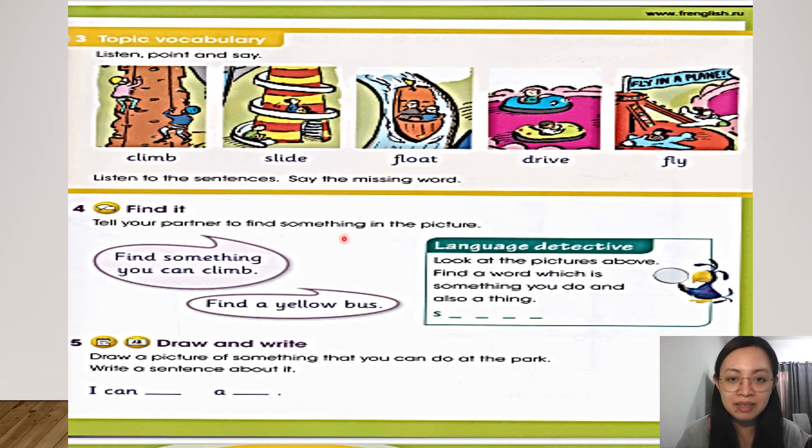So tell your partner to find something in the picture. But this time instead of your partner, you're going to ask your brother or your sister or your mom or your dad, or if you have your cousins and friends at home. Find something that you can climb and find a yellow bus. So draw and write. This time, draw the picture of something that you can do at the park. Write the sentence about it. This part is for your activity book.